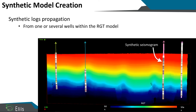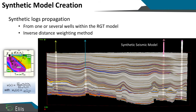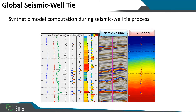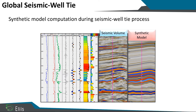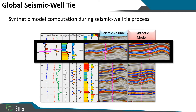To do the global well tie, we create a 3D model, and we propagate the log using this 3D geomodel, exactly like the property modeling, and then we propagate the synthetic using this 3D geomodel. As you can see, I have a synthetic volume and my seismic volume, and then I can compare the two pictures. Exactly like the local seismic to well tie, I can do some time shifts or some stretch and squeeze to fit my synthetic model with my seismic model.